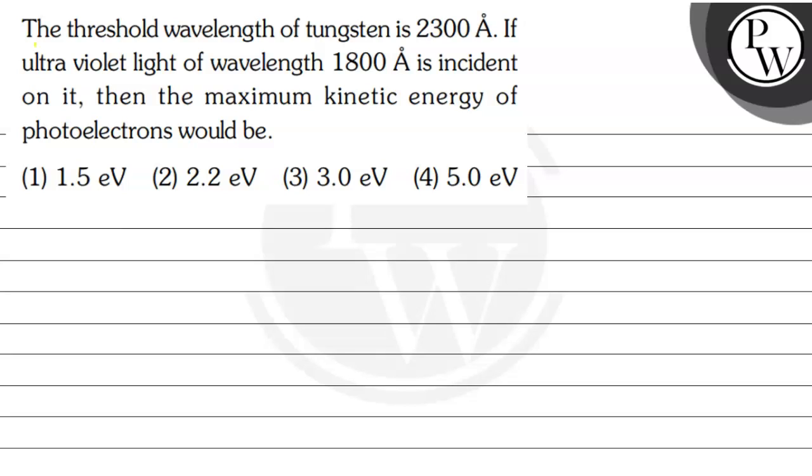Let's read this question. The question says that the threshold wavelength of tungsten is 2300 angstrom. If ultraviolet light of wavelength 1800 angstrom is incident on it, then the maximum kinetic energy of photoelectrons would be.